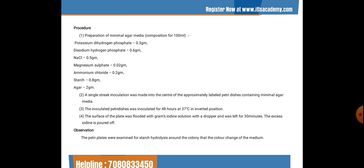A single streak inoculation was made into the center of the appropriately labeled petri dish containing the minimal agar media. The inoculated petri dishes were incubated for 48 hours at 37°C in inverted position. The surface of the plate was then flooded with Gram's iodine solution using a dropper, left for 30 minutes, and excess iodine poured off. The petri plates were then examined for starch hydrolysis around the colony by observing color change.